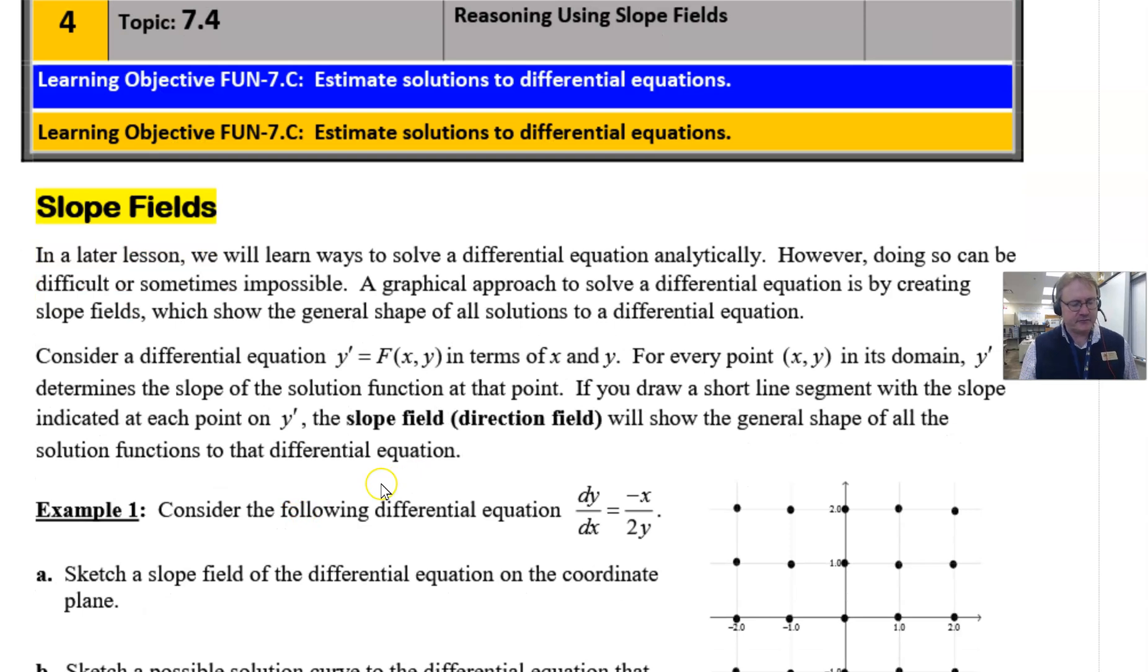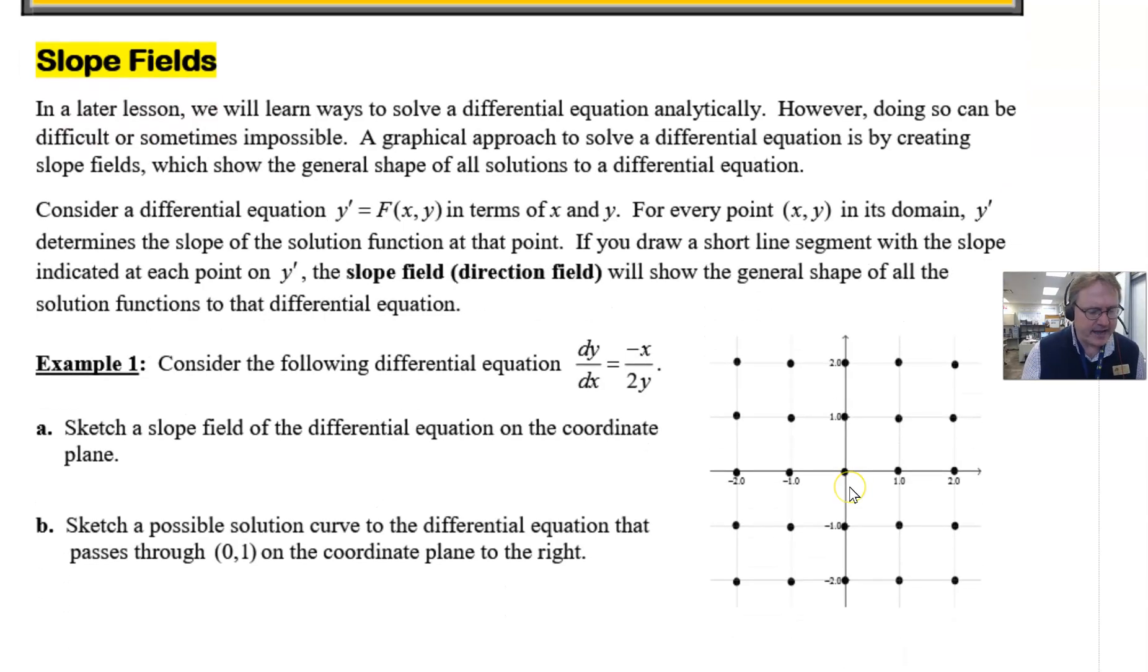In other words, we have a differential equation like in example one: dy/dx equals negative x over 2y. But at this point in time we really don't know what that is the derivative of. Mainly because it has both x's and y's in it and we haven't kind of learned that yet. But we will. For right now I just want to examine all the possible slopes of the tangent lines at some selected points and see what they look like. So that's what we got on order here for our example one.